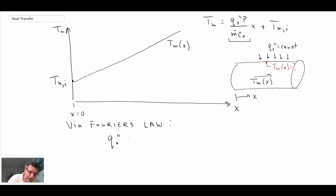So looking at Fourier's law in watts per meter squared, we have this expression and we know that this here is a constant because we have a constant heat flux boundary condition.